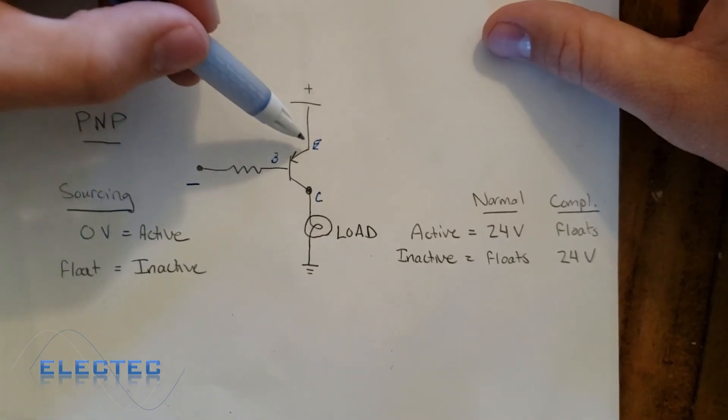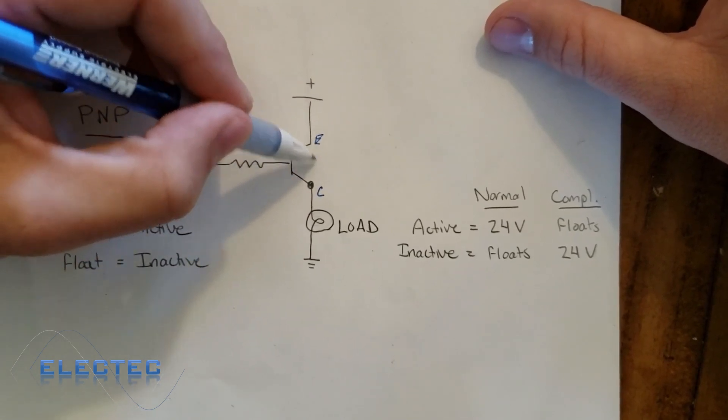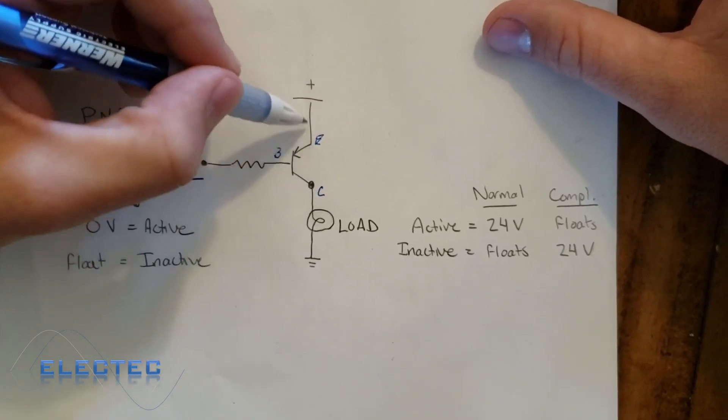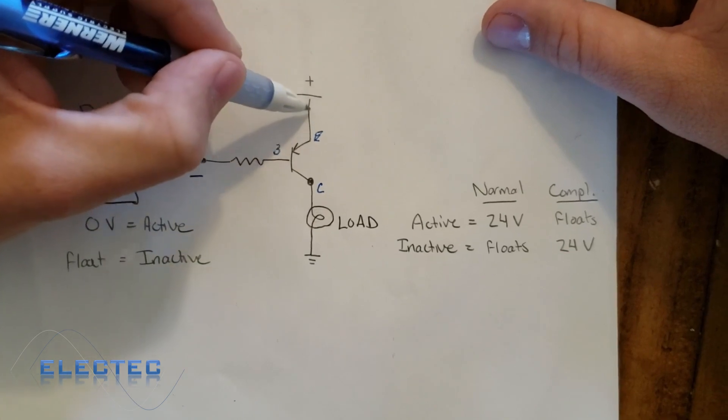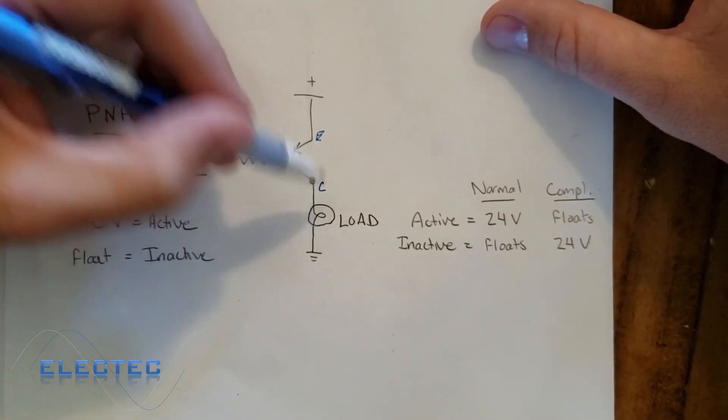When the transistor turns on, what happens is like an invisible wire connects this collector and this emitter together. So essentially, we provide this positive voltage to this side of the load, and voila, the load turns on.